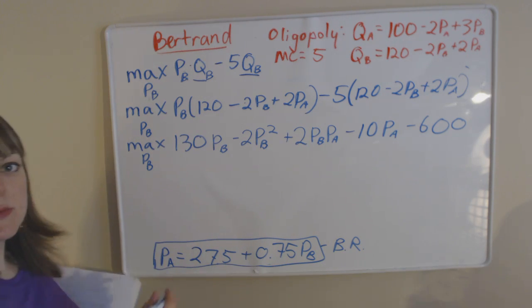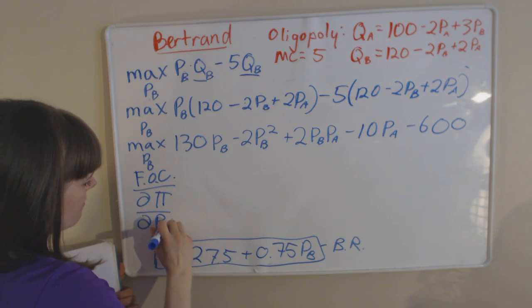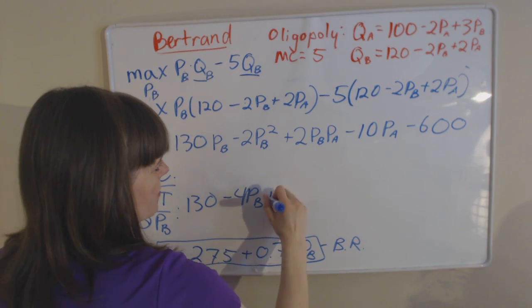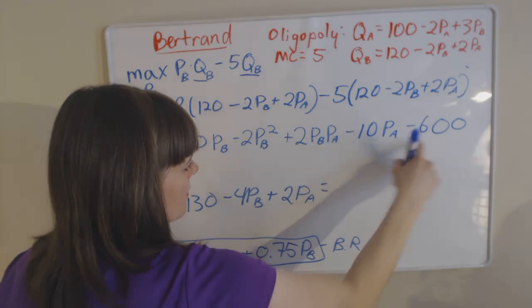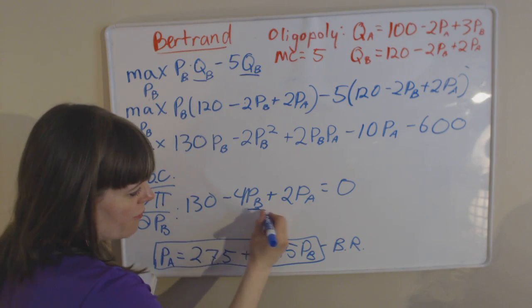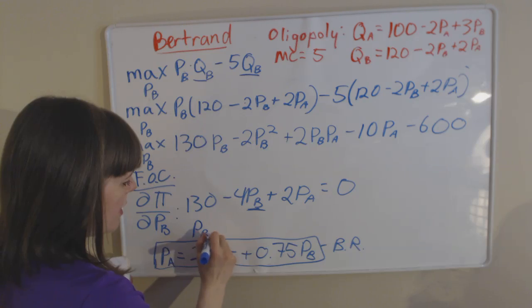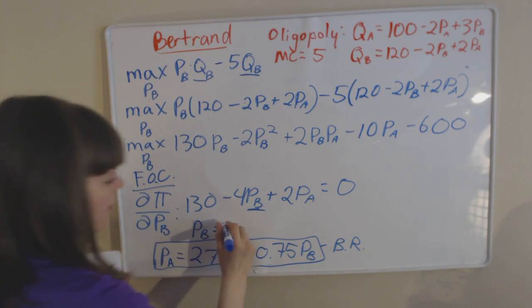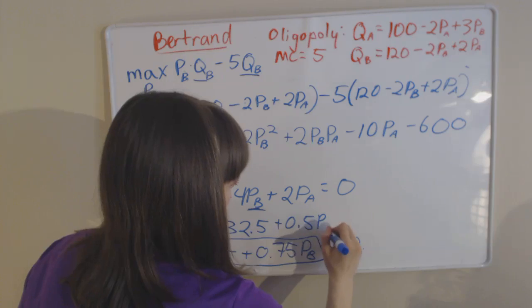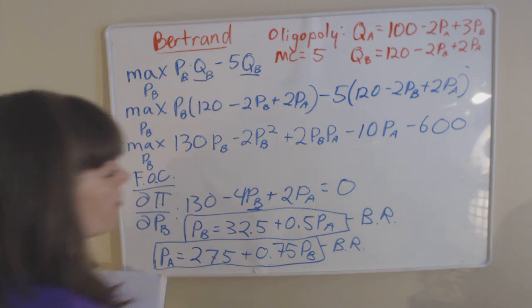We've set up firm B's maximization problem and now we're ready to take the first order condition by taking the partial derivative with respect to the price of firm B. That gives us 130 minus 4·PB plus 2·PA equals 0. We can simplify by solving for PB, since this is firm B's maximization problem. Solving for PB gives us firm B's best response function: PB equals 32.5 plus (1/2)·PA.